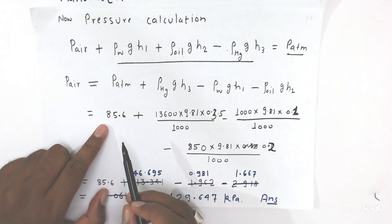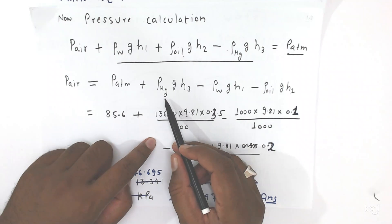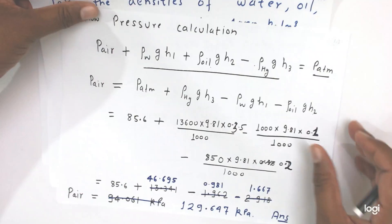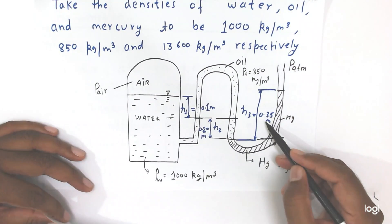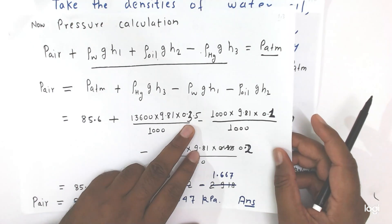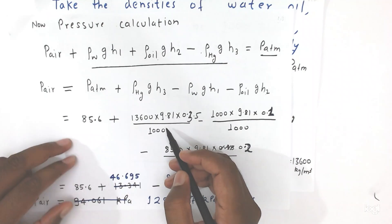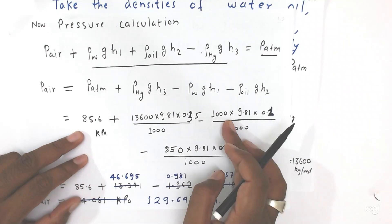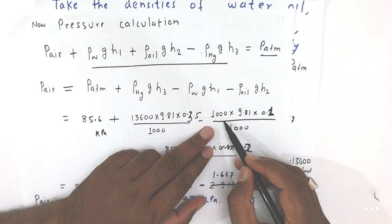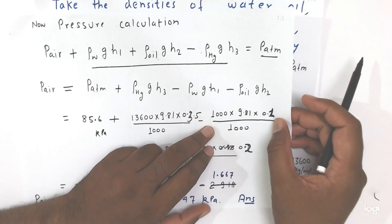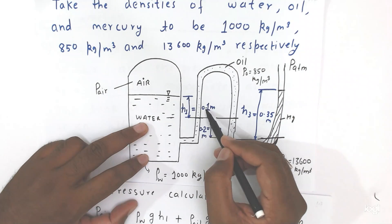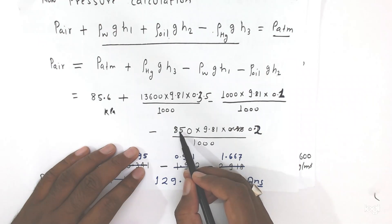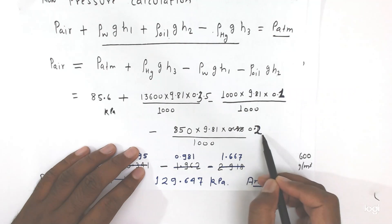We divide by 1000 because the pressure is already in kilo Pascal, so this whole value will come in kilo Pascal. Then minus density of water 1000 into 9.81 into height 0.1, divided by 1000. Water height is 0.1 m and oil height is 0.2 m. Oil density is 850 into 9.81 into height 0.2 meter, divided by 1000.